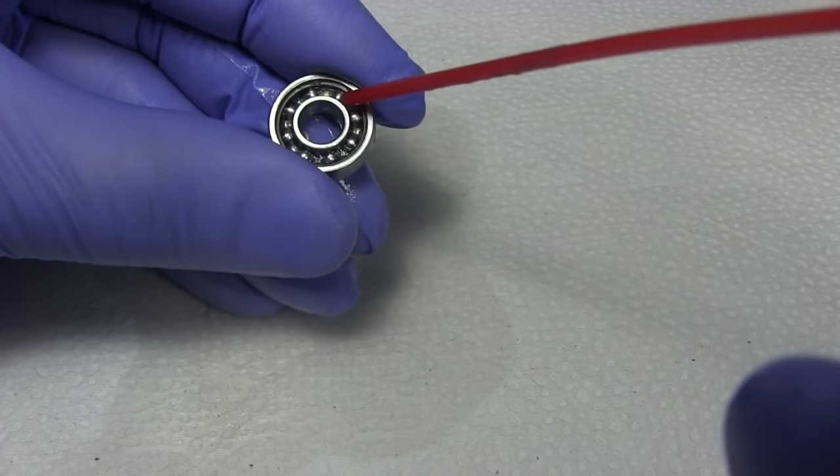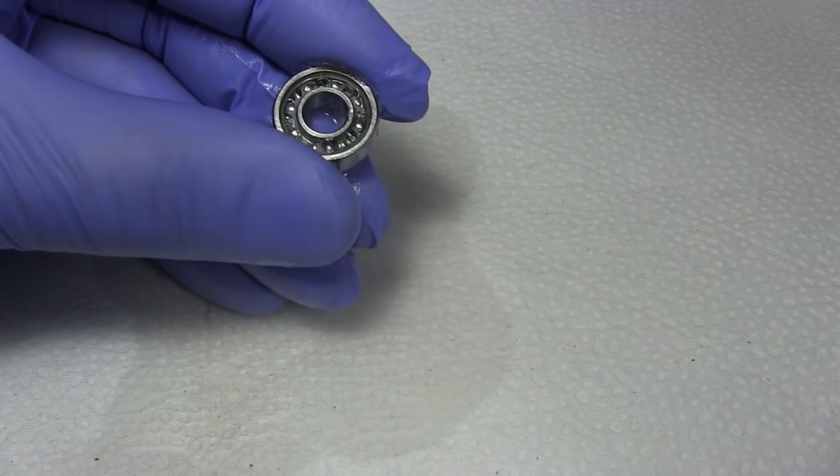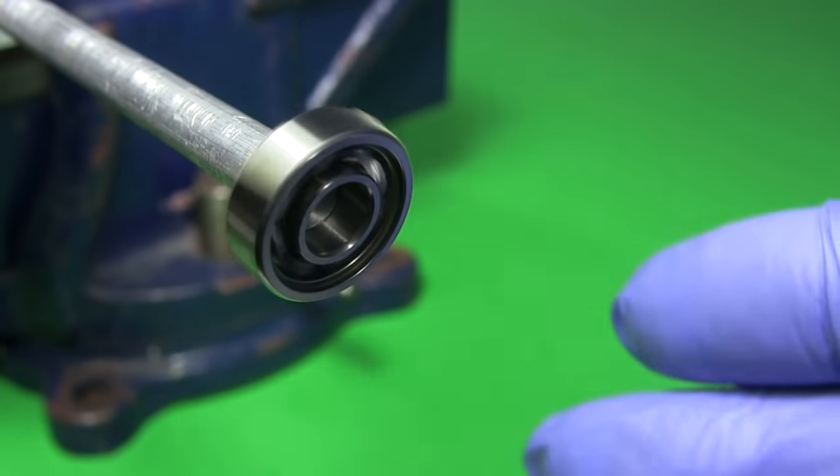WD-40 acts as a lubricant, just like the grease does, but it's also great for removing grease. Now the bearing actually spins a bit.